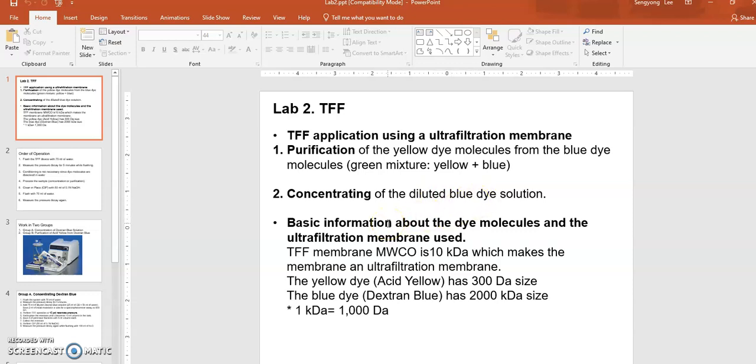Basic information about dye molecules you will be using: yellow dye is called acid yellow, about 300 Dalton or 0.3 kilodalton. Blue dye is dextran blue, a very large molecule, about 2,000 kilodalton. There's a significant difference in their sizes: 2,000 kilodalton versus 0.3 kilodalton.